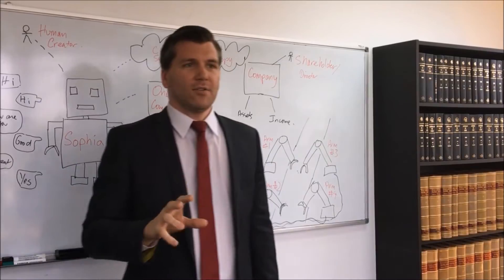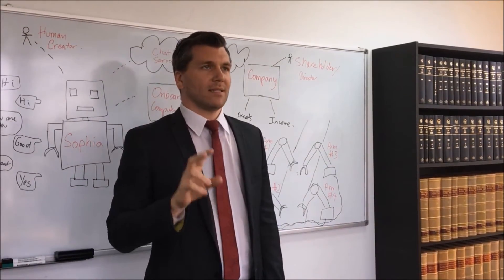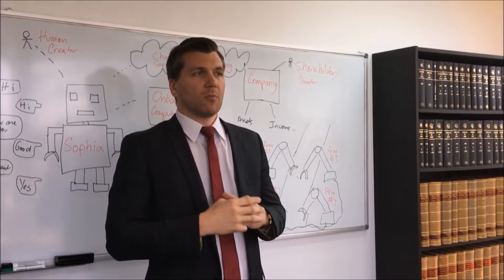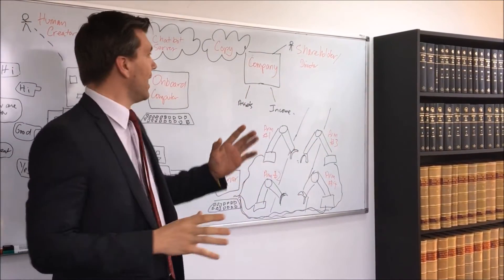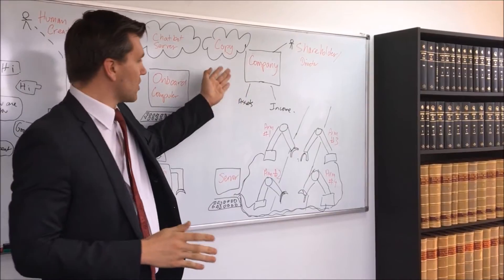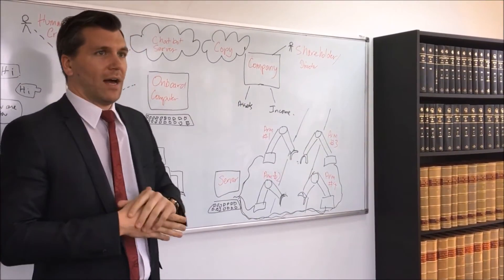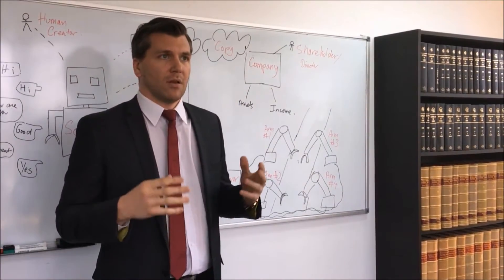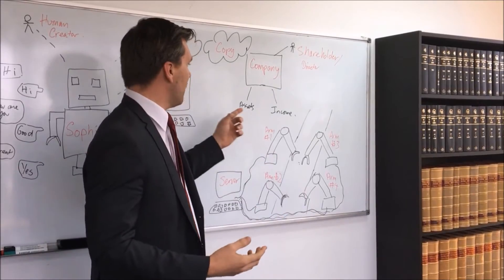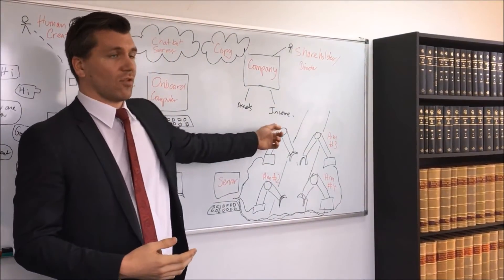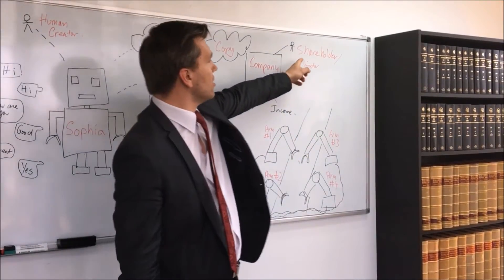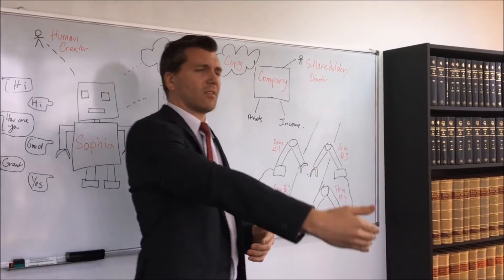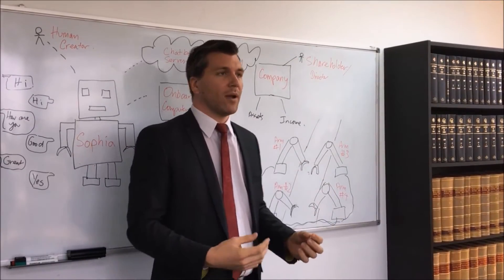Now, I do not have a problem with granting citizenship or legal personhood to something artificial. There is a long precedent in that, and we see this today in companies. So companies have an artificial legal personhood. They can own assets. They can derive income. They get taxed. Ultimately, there are shareholders and directors behind them. Ultimately, it comes back to a human somewhere.